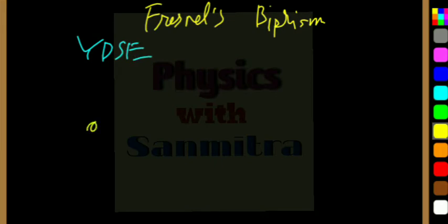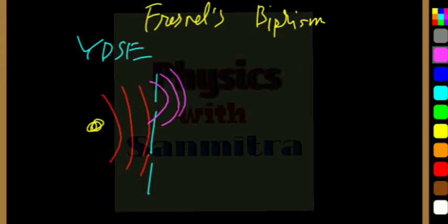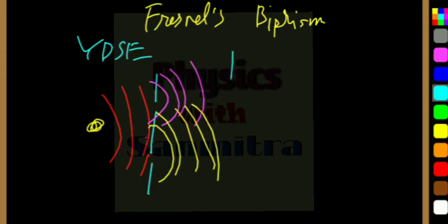...that there is a single source and a screen with two slits. Due to the single source emitting wavelets and generating waves, we have primary wavelengths. From the primary wavelengths, the secondary wavelengths are coming and these will interfere to create fringes.